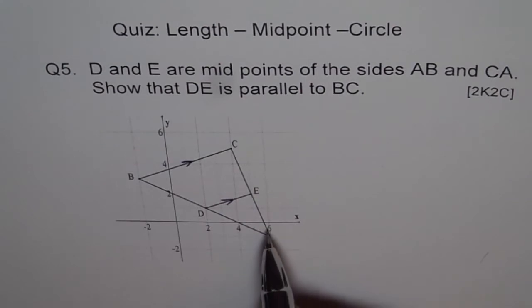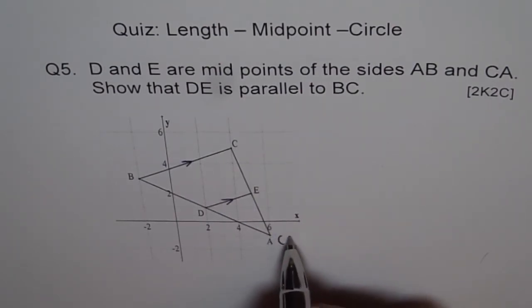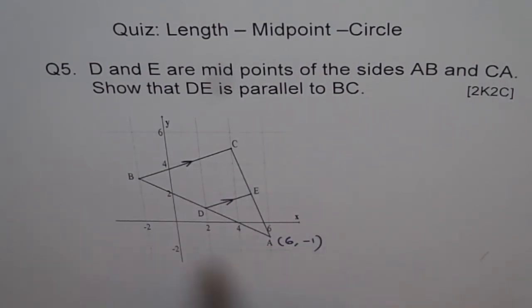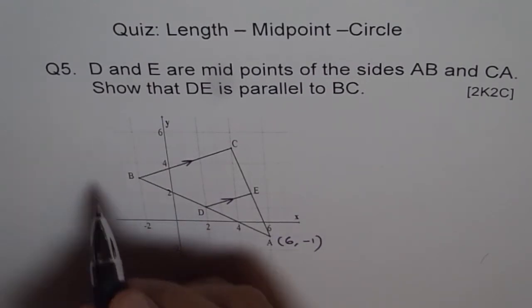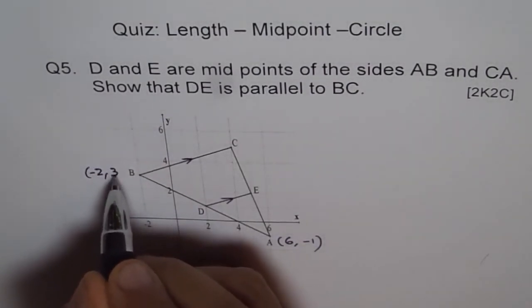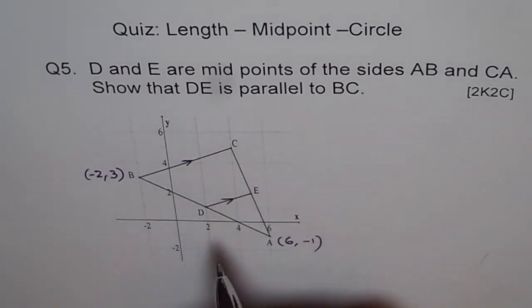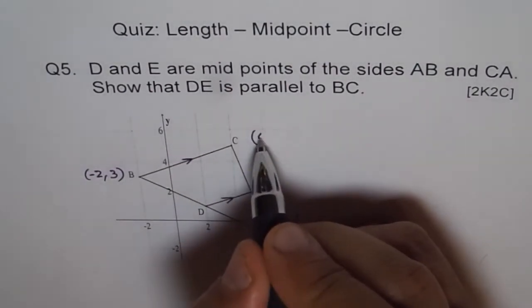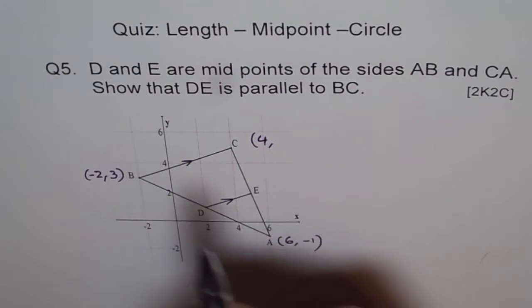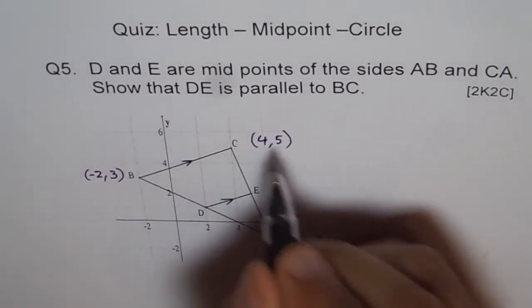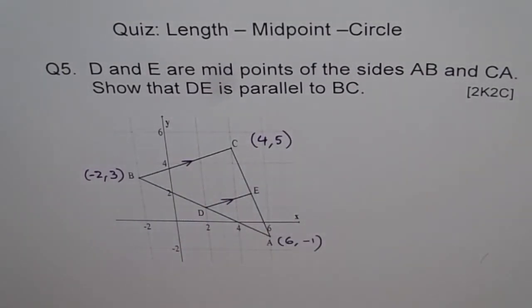So A is (6, -1). Let me write it here. And B is (-2, 3). How about C? C is (4, 5). So we know A, B, and C coordinates.